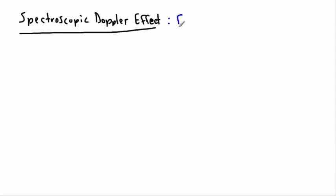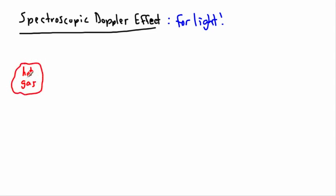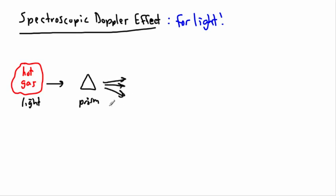Let's say we have some sort of hot gas in outer space — this could be a star or hydrogen gas being heated up. Whatever it is, this hot gas will emit light. We take that light and put it into a prism or diffraction grating to break it up. What happens then is the light breaks up into its different individual wavelengths.